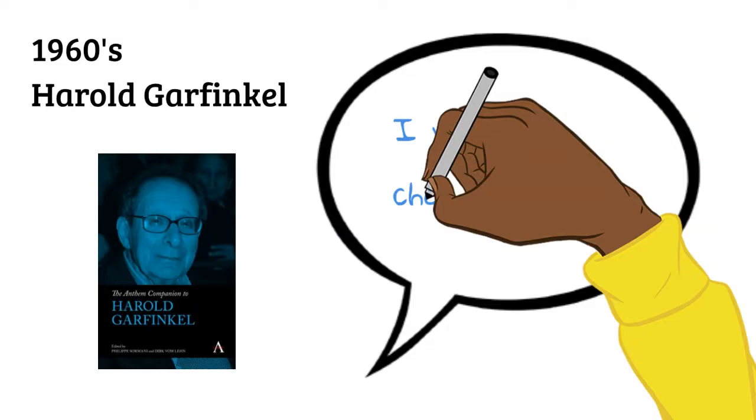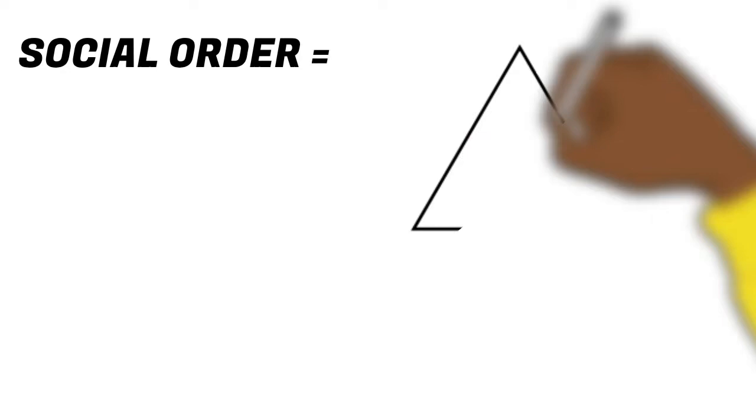Ethnomethodology's interest is in how ordinary people make sense of their social world. Garfinkel claimed that social order was achieved from the bottom up.